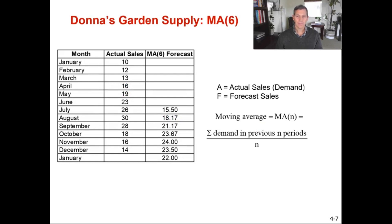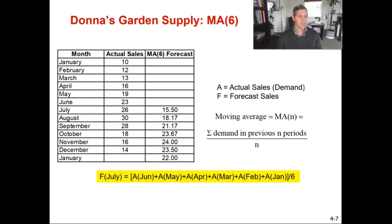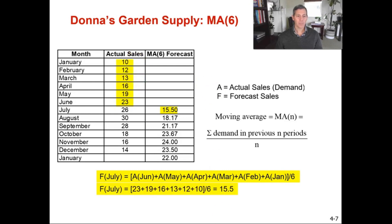Donna also wanted us to calculate a six-month moving average. It's the same formula, but with N equal to six. We need the previous six periods. To calculate July — the first month we can calculate with six months of prior data — we take 23 plus 19 plus 16 plus 13 plus 12 plus 10, divide by six, and get 15.5 for the six-month moving average for July.